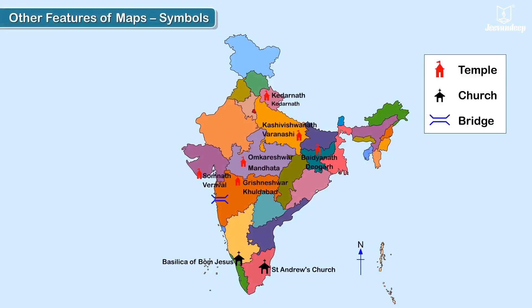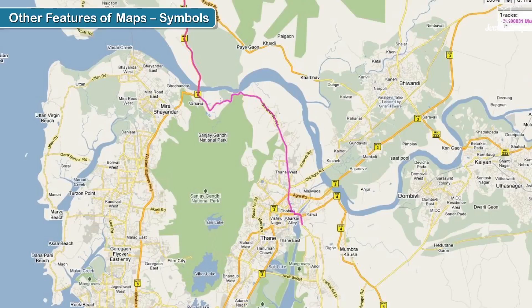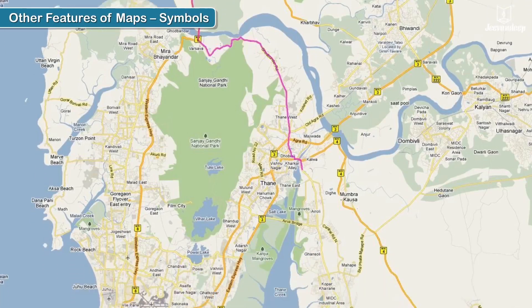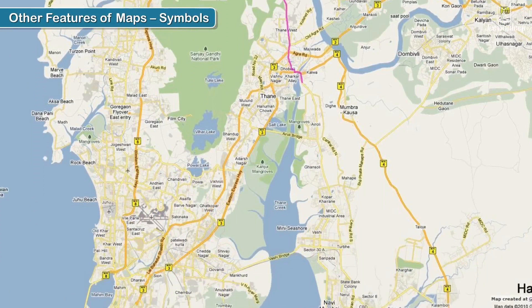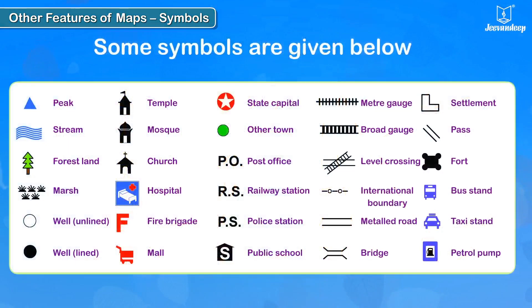Symbols: In maps, symbols are meant to provide information about the geographical location of places like temples, churches, bridges, or roads, etc. Some common map symbols are shown below.